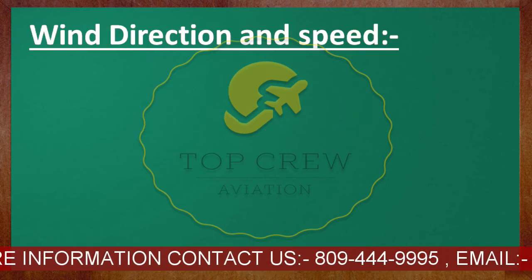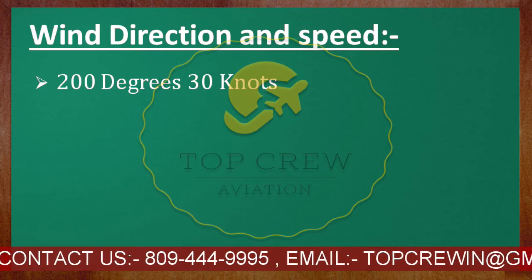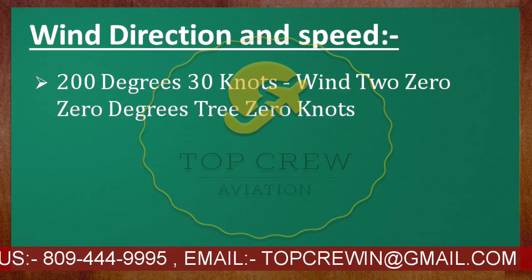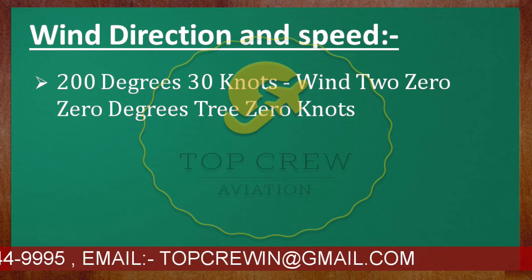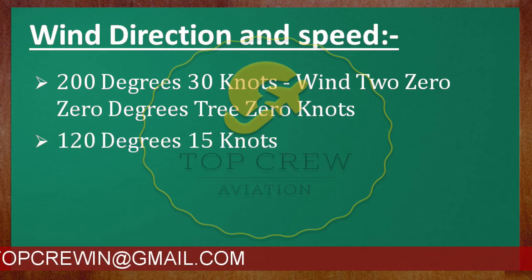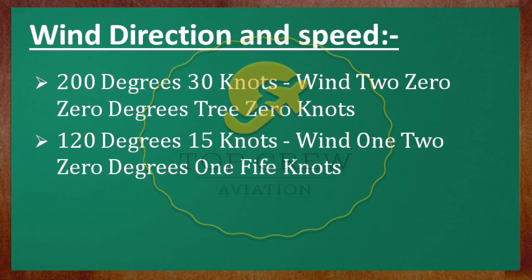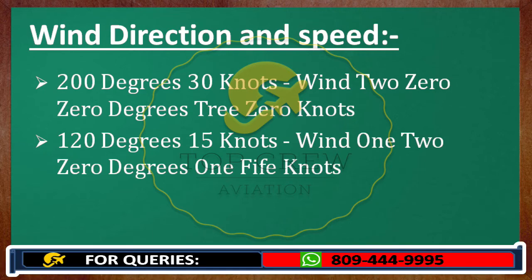Wind direction and speed would be written like this. We would transmit it as wind 200 degrees 30 knots. Second example: wind 120 degrees 15 knots. If ATC is transmitting to us, then we would write it like this. Both things are vice versa. I am sure you are getting my point.